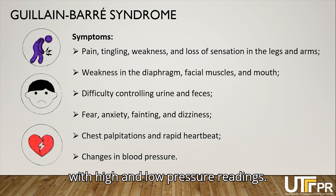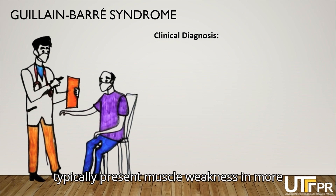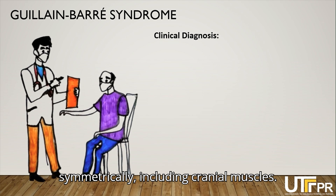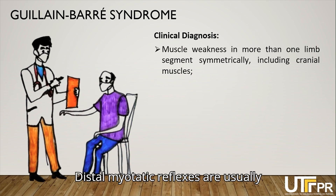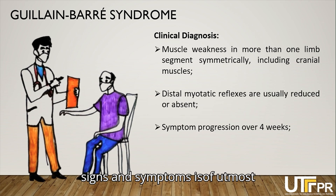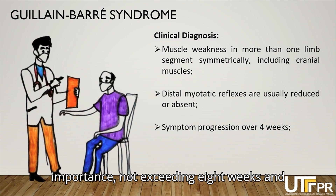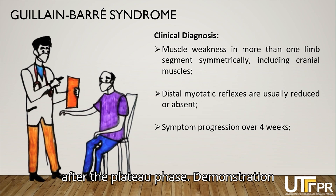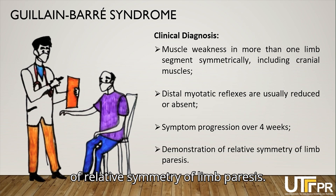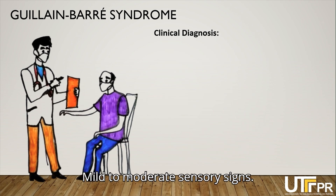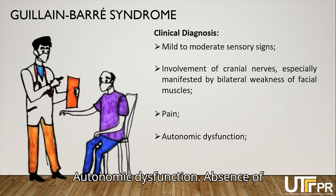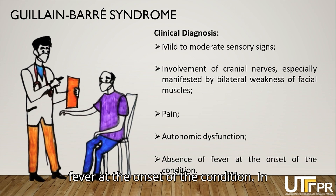Patients with Guillabar Syndrome typically present muscle weakness in more than one appendicular segment symmetrically, including cranial muscles. Distal myotatic reflexes are usually reduced or absent. The progression of signs and symptoms is of utmost importance, not exceeding 8 weeks, with recovery beginning 2 to 4 weeks after the plateau phase. Diagnostic features include relative symmetry of limb paresis, mild to moderate sensory signs, involvement of cranial nerves especially bilateral facial weakness, pain, autonomic dysfunction, and absence of fever at the onset.